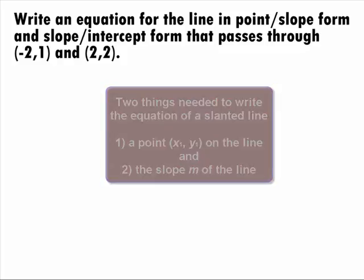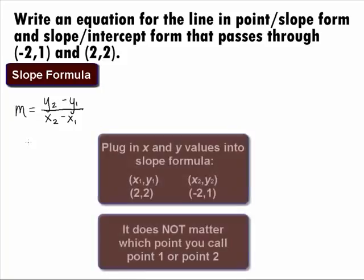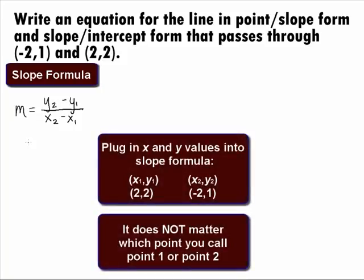Since we are given two points, we can find the slope by using the slope formula m equals y2 minus y1 over x2 minus x1. It doesn't matter which point you label as point 1 and point 2 as long as you are consistent throughout the whole slope formula. Let's go ahead and call 2, 2 point 1 and negative 2, 1 point 2.